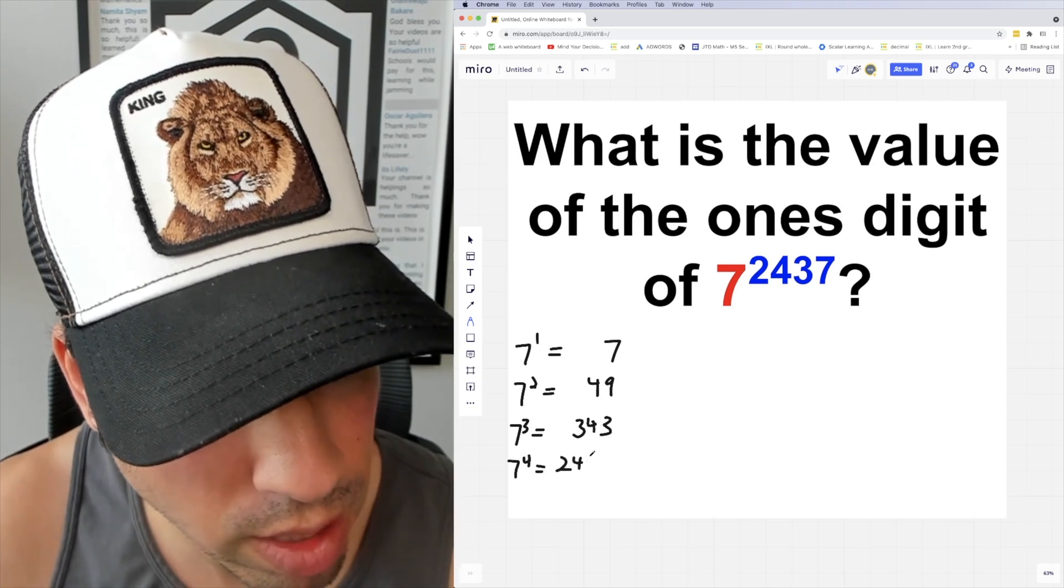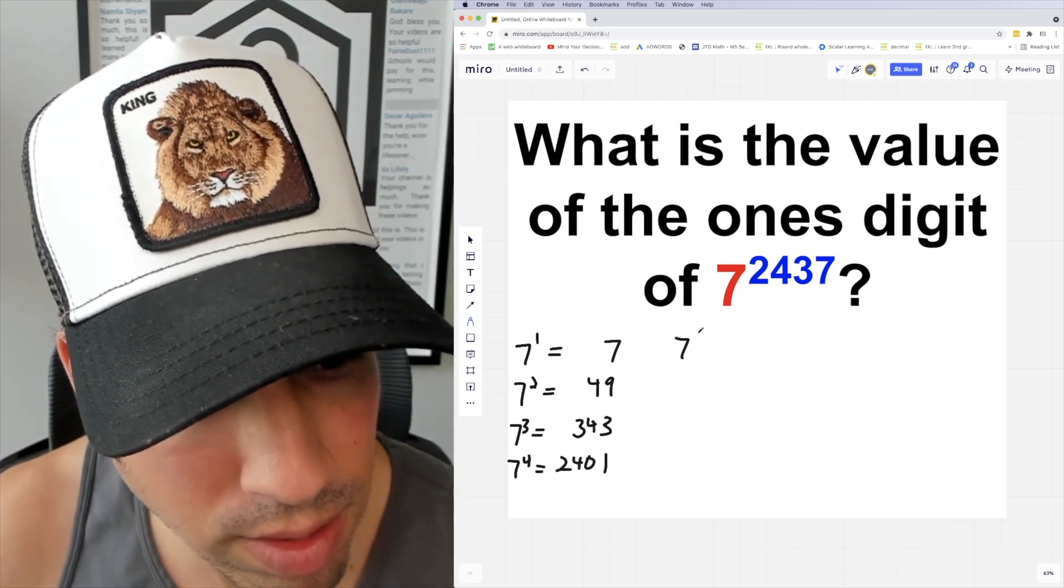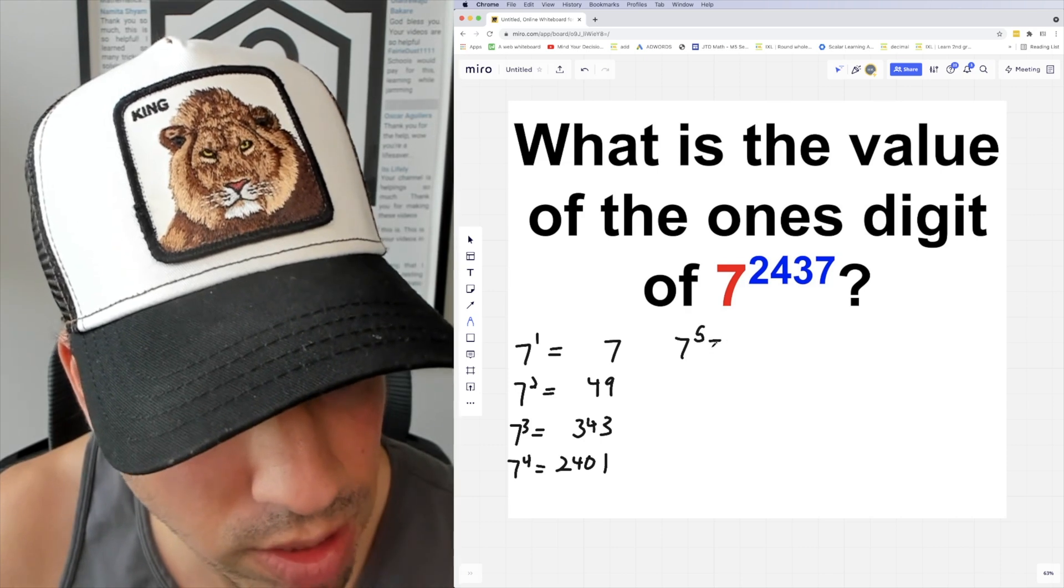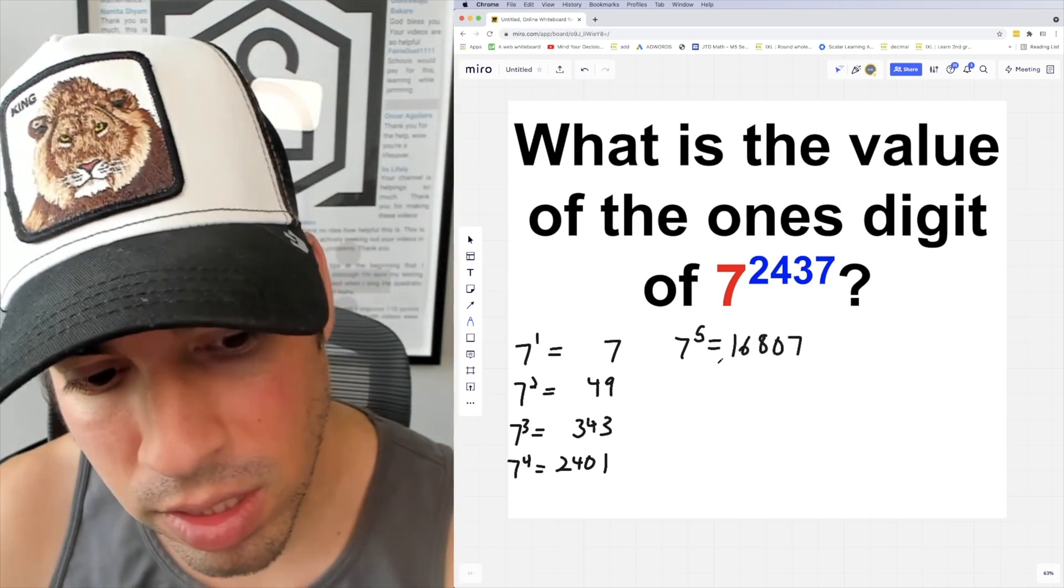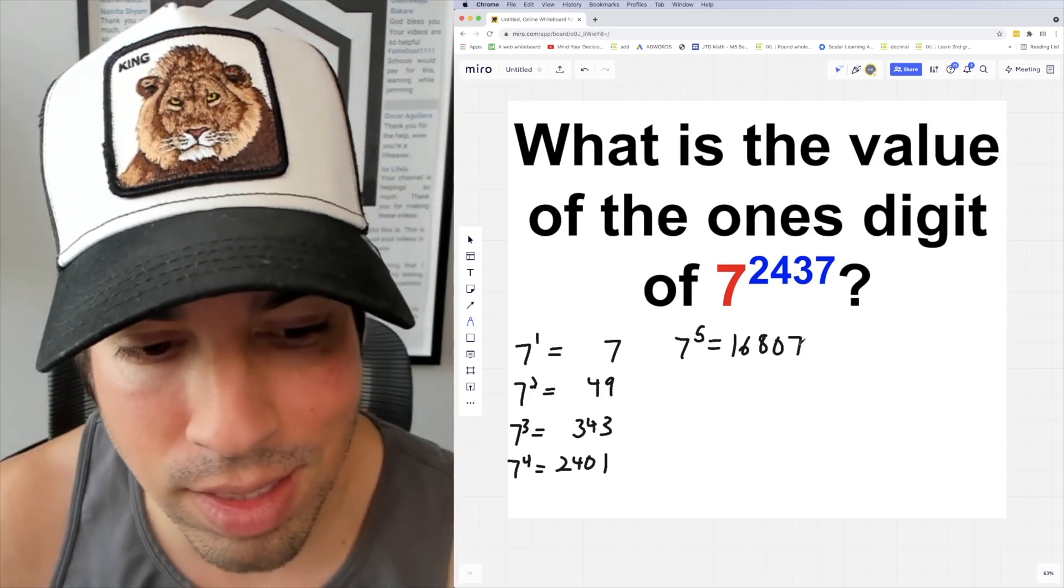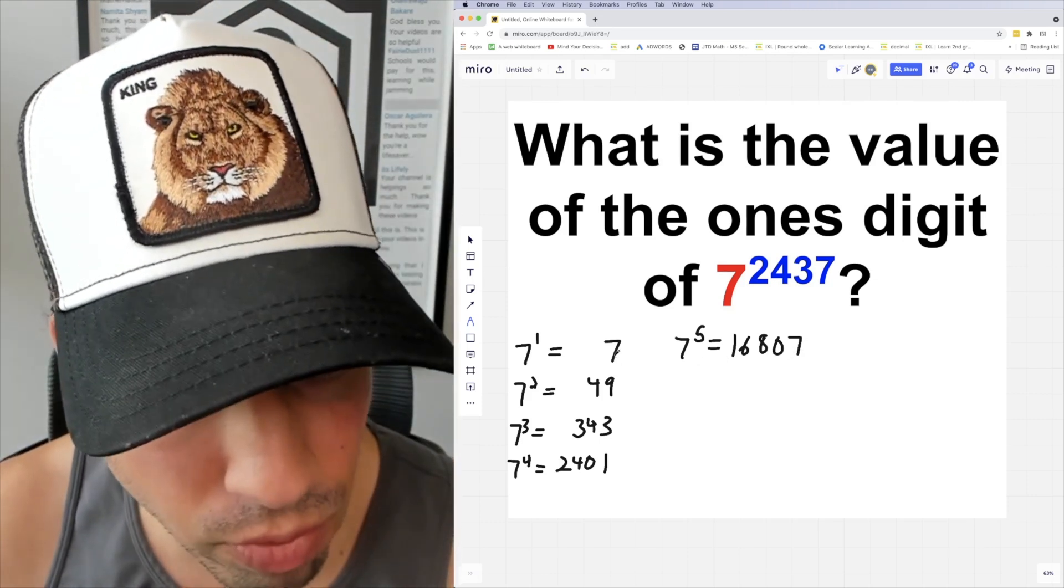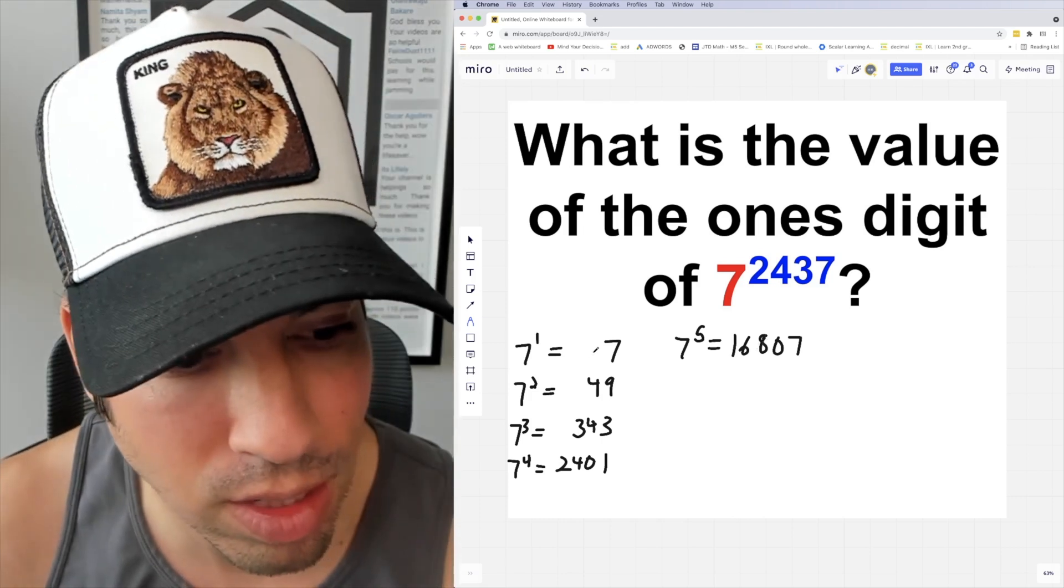Now when we do 7 to the fifth power, we get 16,807. But I don't really care about all these digits, all I care about is the ones digit. And I see something that existed before - the 7 has popped up again in the ones place.